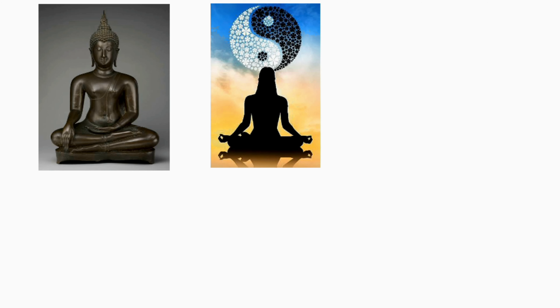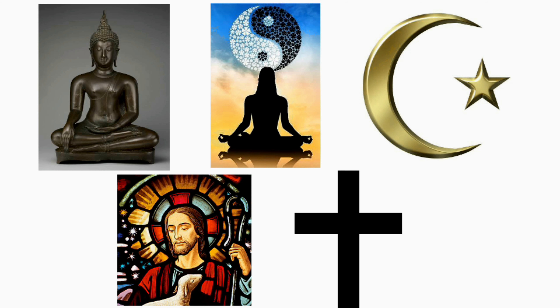China is a country with a great diversity of religious beliefs. The main religions are Buddhism, Taoism, Islam, Catholicism, and Protestantism. Citizens of China may freely choose and express their religious beliefs and make clear their religious affiliations. The primary traditional religions in China are Buddhism, Taoism, and Confucianism.